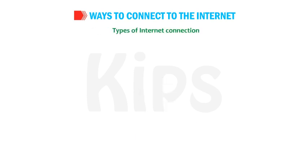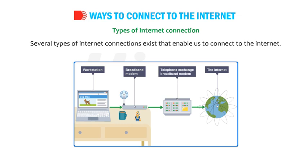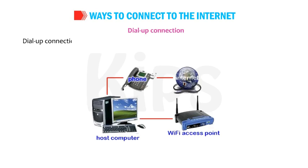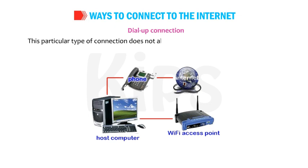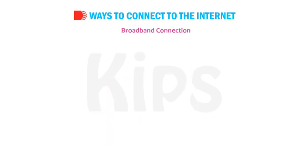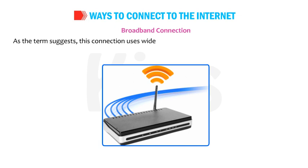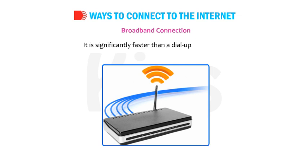Let us learn about various types of Internet connections. Several types exist that enable us to connect to the Internet. Dial-Up Connection requires users to link their phone line to a computer in order to access the Internet. This type does not allow users to make or receive phone calls through their home phone service while using the Internet. Broadband Connection uses wide bandwidth, which provides high-speed Internet access through various transmission mediums. It is significantly faster than a dial-up connection.